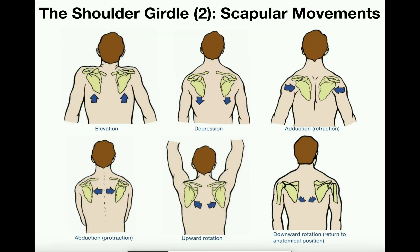There are six major movements of the shoulder girdle, each producing movements of the scapula. Four of those movements — elevation, depression, retraction, and protraction — are gliding movements. The scapula moves either up, down, toward the midline, or away from the midline. Scapular elevation is when the scapulae glide upward, seen when people perform shrugs. Depression is the opposite — the scapulae move downward. We actually have more range of motion in elevation than in scapular depression.